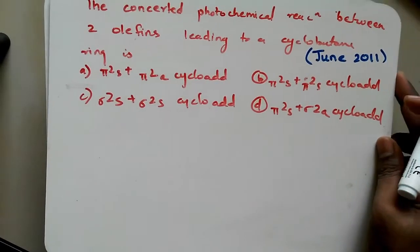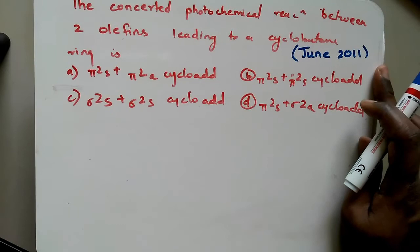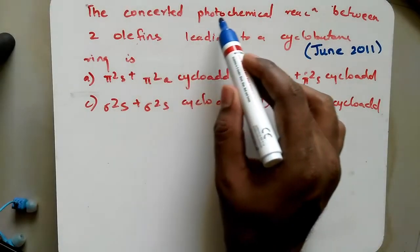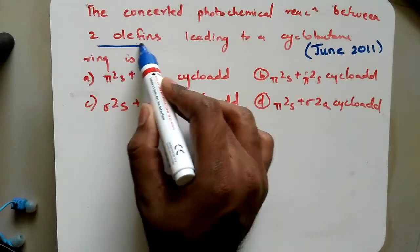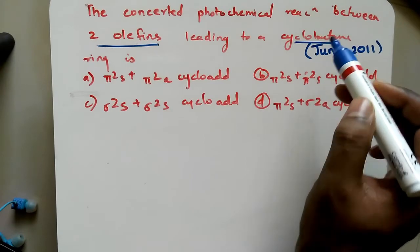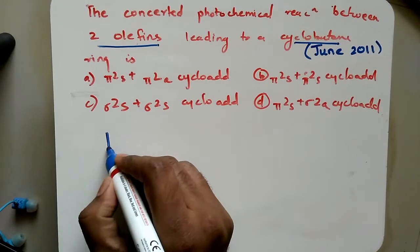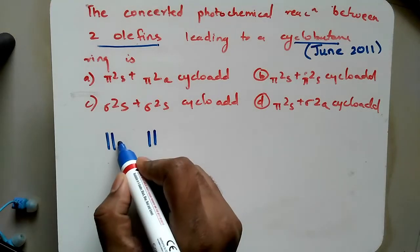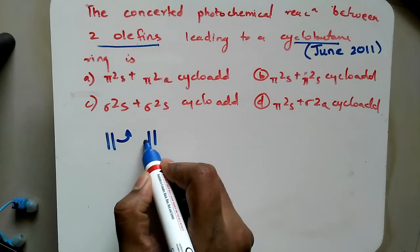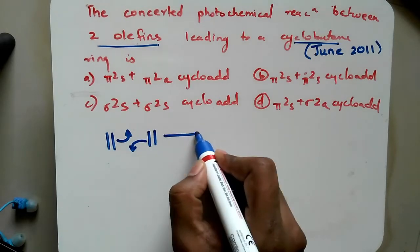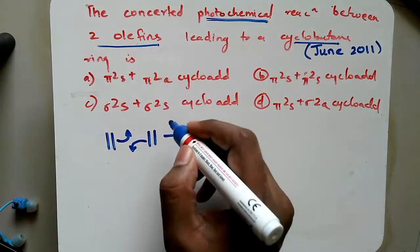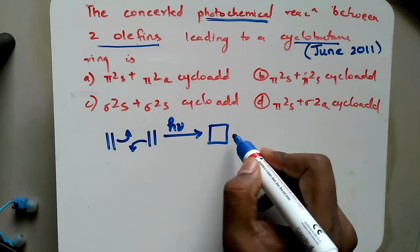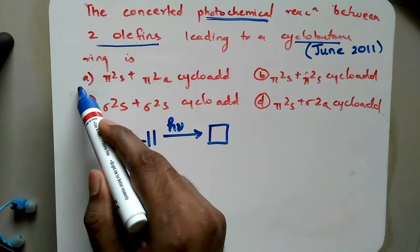This question is from CSIR NET June 2011: the concerted photochemical reactions between two olefins leading to cyclobutane. Cyclobutane means there will be two ethene molecules participating, as I discussed in the part 1 video. This double bond and this double bond — the condition given is photochemical, that is hν — will lead to the formation of a cyclobutane ring.